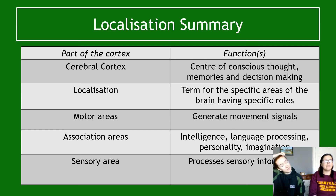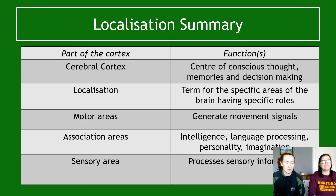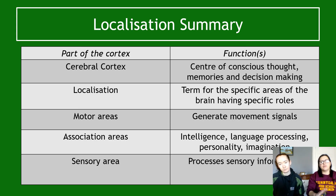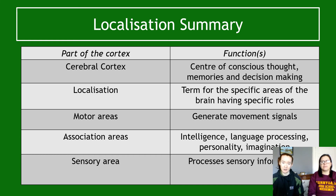That's pretty much this first video. As a quick summary: you need to know the cerebral cortex, previously called the cerebrum, is the center of conscious thought, memory, and decision-making. Localization is the term for specific areas of the brain having specific roles — that term comes up in exam questions, so make sure you know it. A localized area example is the motor area, used for generating movement signals, and the sensory area, which processes sensory information.